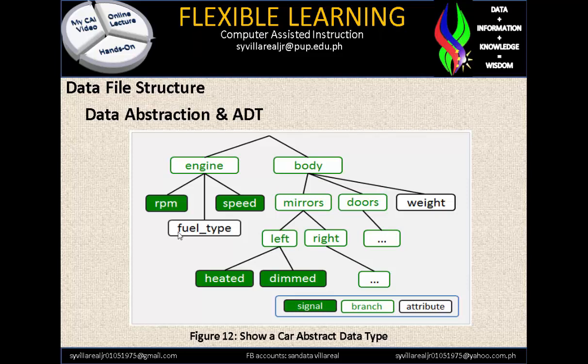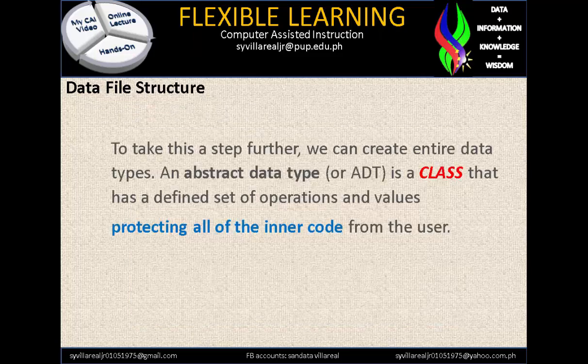That is the part that programmers handle — you hide all the program logic, but the design itself will display on the computer screen for users to use, making it efficient and effective. To take this a step further, we can create entire data types. An abstract data type, or ADT, is a class that has a defined set of operations and values. Abstract data type is hidden and protected — it is a class protecting all of the inner code from the user.